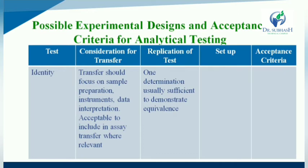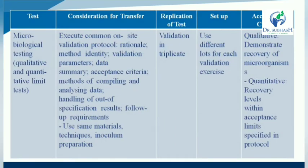For the identity test, consideration for transfer: the transfer should focus on sample preparation, instruments, data interpretation, and acceptance — to be included in the assay transfer where relevant. Replication of test: one determination is usually sufficient to demonstrate equivalence. Setup and acceptance criteria: null.